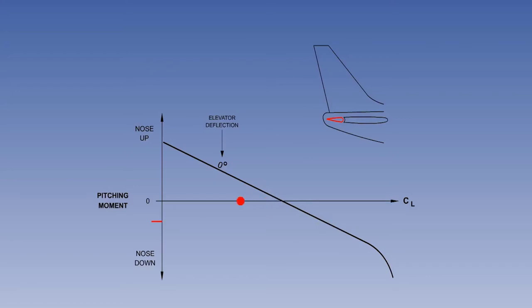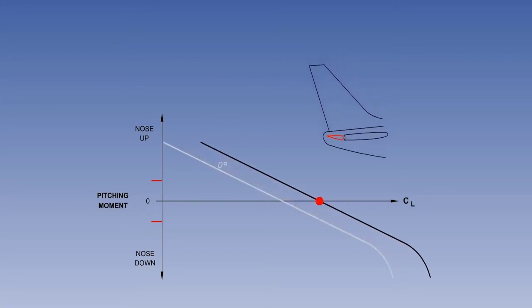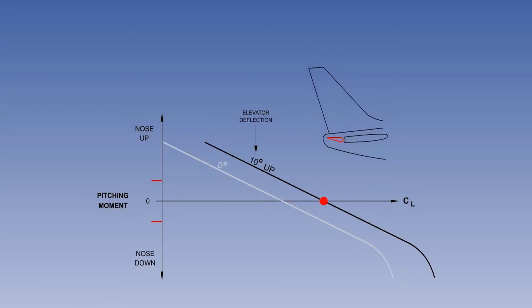A momentary decrease in angle of attack generates a stabilising nose-up pitching moment. The illustration shows a certain amount of static longitudinal stability with the elevator at neutral. The aircraft maintains level flight by increasing the angle of attack as indicated airspeed decreases until it is in equilibrium at a lower airspeed. To hold this angle of attack at the lower airspeed, the elevator must remain displaced at 10 degrees up from neutral.